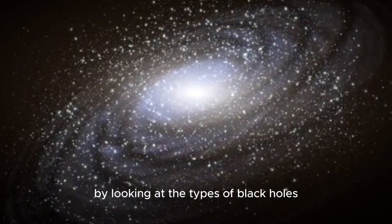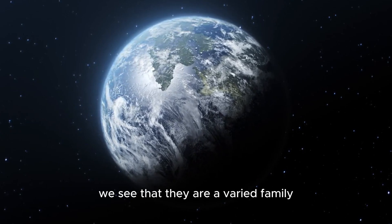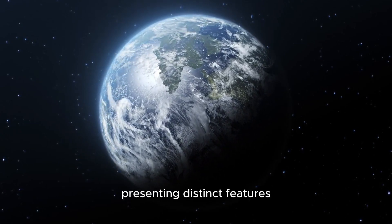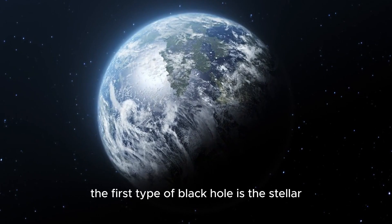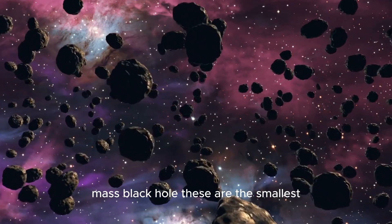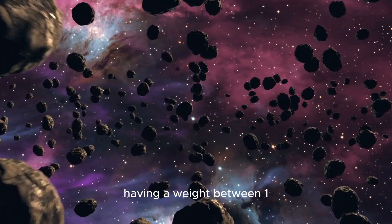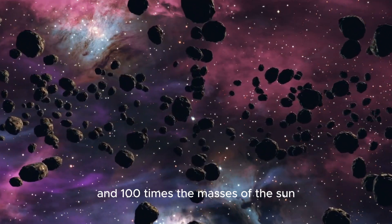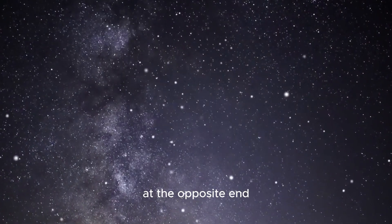By looking at the types of black holes, we see that they are a varied family presenting distinct features. The first type of black hole is the stellar mass black hole. These are the smallest, having a weight between 1 and 100 times the masses of the sun. At the opposite end, we have the supermassive black holes weighing million or even billion times the mass of the sun.